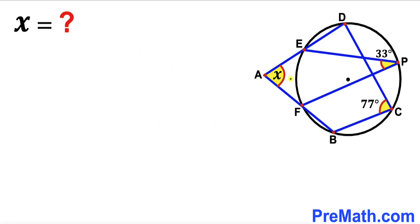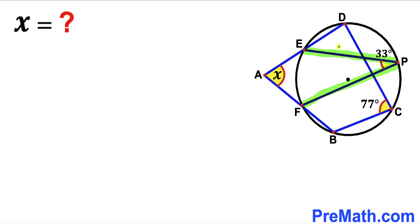Welcome to pre-math. In this video we have a circle and quadrilateral ABCD such that angle BCD is 77 degrees and angle DAB is represented by x degrees. Moreover, we have two chords EP and FP that make an angle of 33 degrees, and our task is to find the value of angle x.